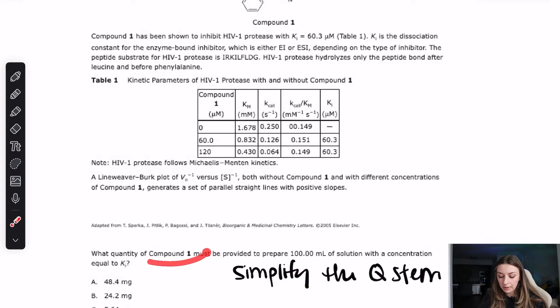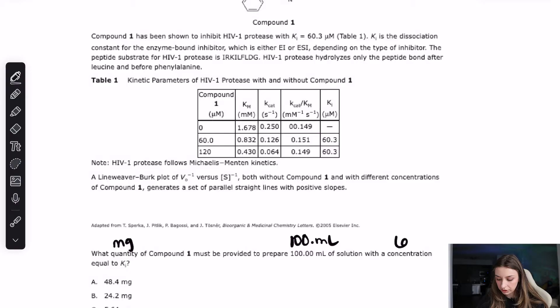they're asking me about compound one. Okay, that's this protease thing that I read about up in the passage. They're asking me about a quantity of compound one. So what quantity of compound one? And I noticed down here, my answer choices, they're all in milligrams. Okay, that's interesting. So basically how many milligrams of compound one must be provided in order to get 100 milliliters of solution. So there we are. We have another number, 100 milliliters with a concentration equal to KI. And if you read the passage and you understood it, then you know that KI is this dissociation constant. But basically this is the more important part that we know that the KI is equal to 60.3 micromolar.